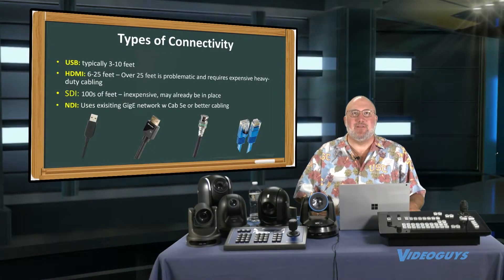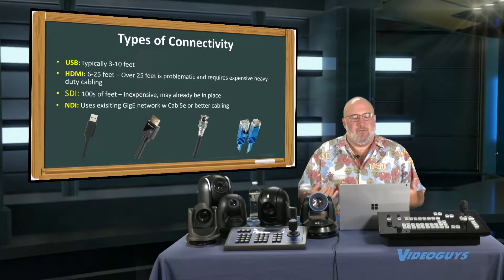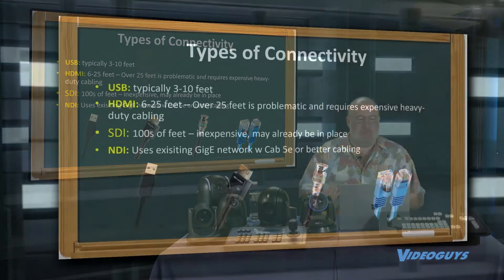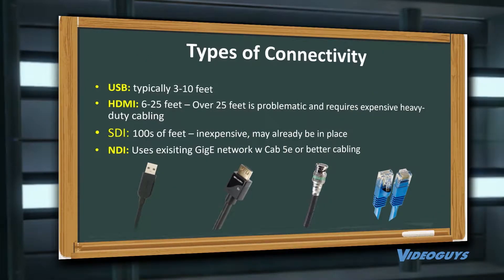I think the most important thing we're going to talk about is the connectivity. So let's bring this up full speed, folks. You have four different types of connectivity, and some cameras have a combination of one, two, three, or all four.